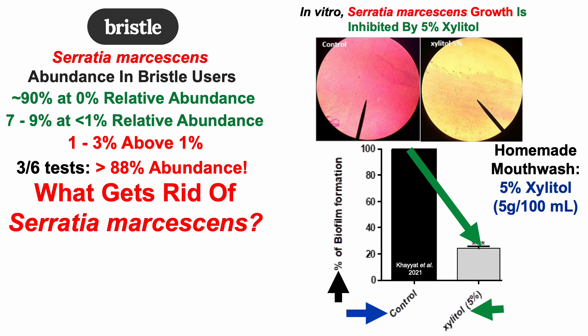With that in mind, I made a homemade mouthwash at a higher concentration of xylitol — exactly 5% xylitol as in the study — to see if it would work in vivo, not just in vitro. That's 5 grams of xylitol per 100 mL of water. I made a 400 mL solution, so 20 grams of xylitol dissolved, and used this mouthwash three to five times per day at various times throughout the day for one month.